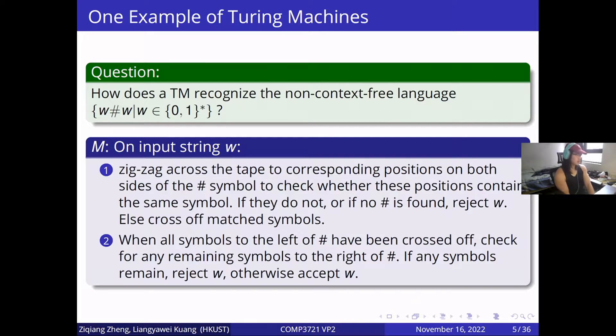One example of Turing machine is shown below. This Turing machine is to recognize the non-context-free language {w#w | w ∈ {0,1}*} by checking both sides of the sharp symbol. If they don't match, or no sharp is found, reject. When all symbols to the left of sharp have been crossed off, check for any remaining symbols to the right. If any symbols remain, reject. Otherwise, accept.